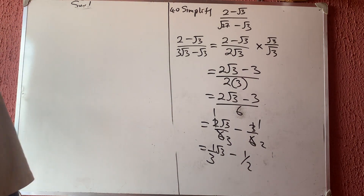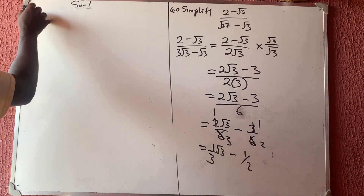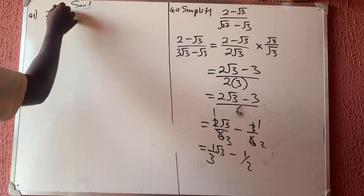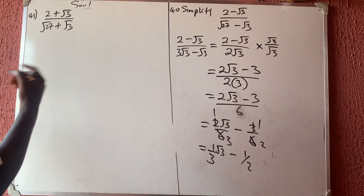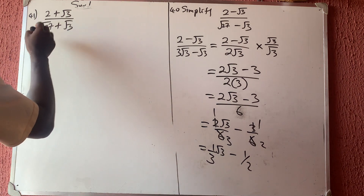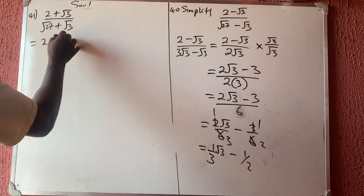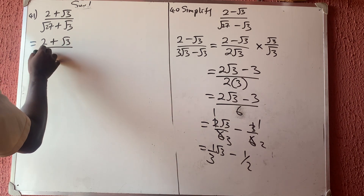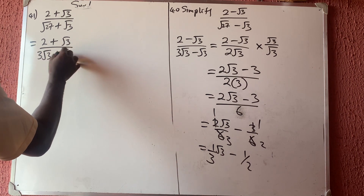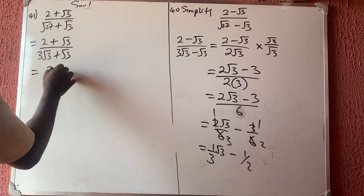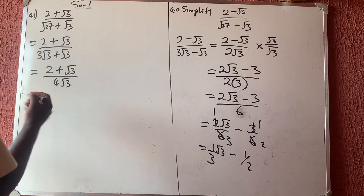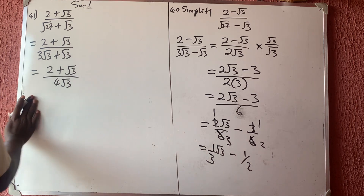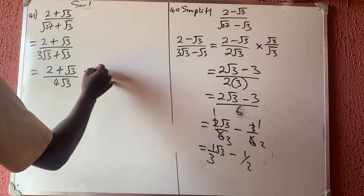Question 41 says: simplify (2 plus √3) all over (√27 plus √3). This is almost the same as the previous question. √27 is 3√3, so the denominator becomes 3√3 plus √3 which equals 4√3. We have (2 plus √3) over 4√3, and we rationalize.